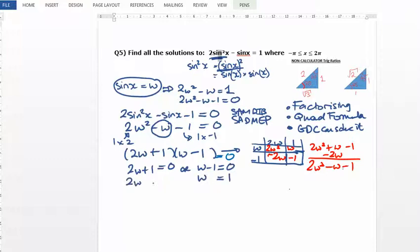In this case, 2w take away 1 from both sides is equal to minus 1. Divide by 2 on both sides. So in this case, w would equal minus 1 half. That's the first stage, step completed. We know that w equals 1 or w equals minus 1 half.